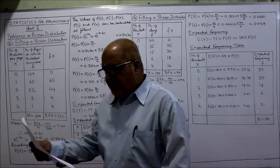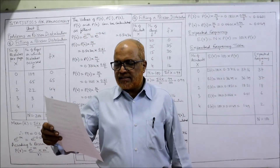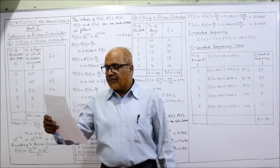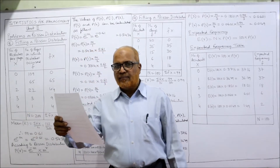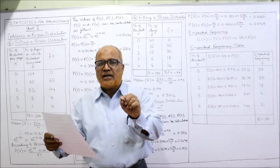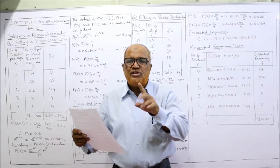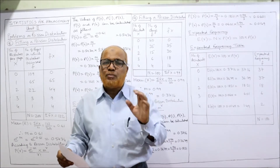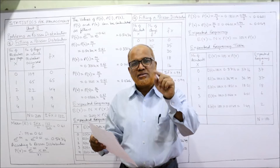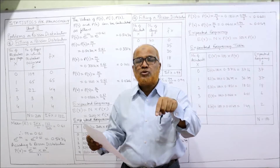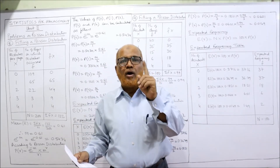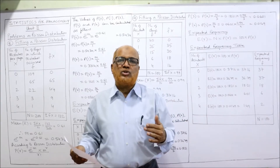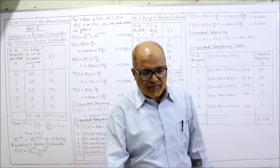Now, problem eight: fit a Poisson distribution to the following data. The data gives the number of mistakes per page. There is a book containing 200 pages total. 109 pages have zero mistakes, 65 pages have one mistake each, 32 pages have two mistakes each, 3 pages have three mistakes each, and 1 page has four mistakes. From these actual observed frequencies, we need to find the expected frequencies according to Poisson distribution.